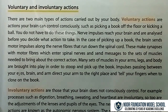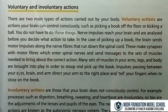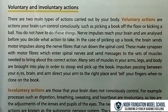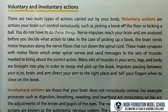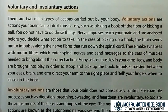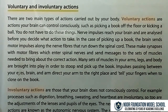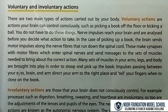There are two main types of actions carried out by your body. Voluntary actions are actions your brain can control consciously, such as picking a book off the floor or kicking a ball.